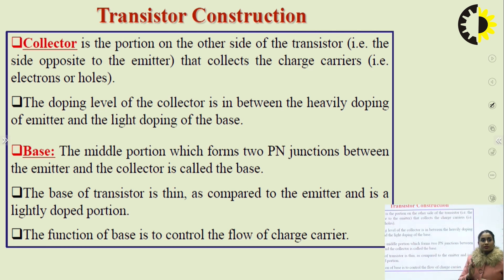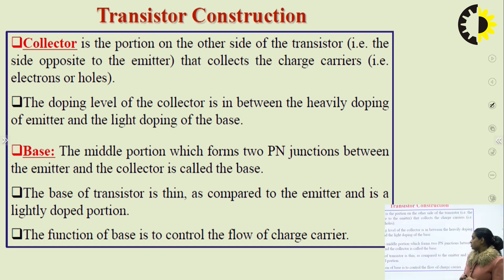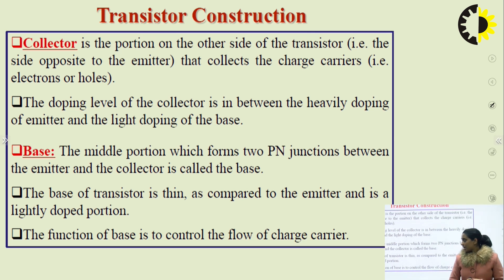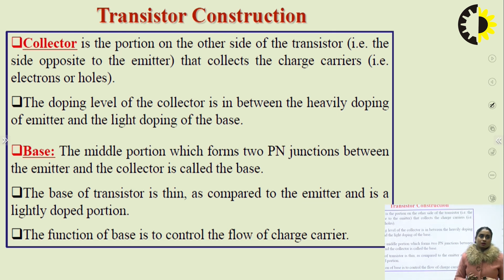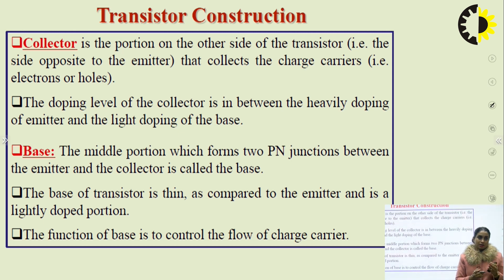The emitter is heavily doped and the base is lightly doped. The base is the middle portion which forms two PN junctions between the emitter and the collector. The base of a transistor is thin and highly — actually most lightly — doped. The function of base is critical: it manages and controls the flow of charge carriers, whether electrons or holes, as everything passes through the base.